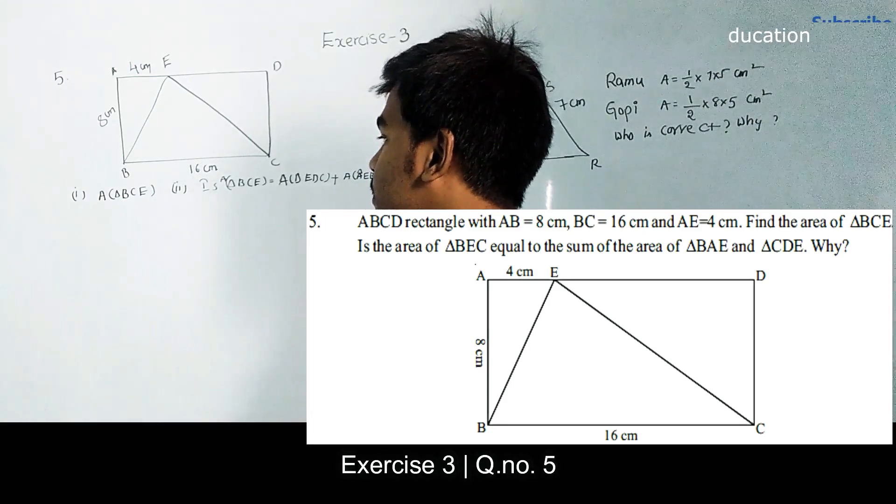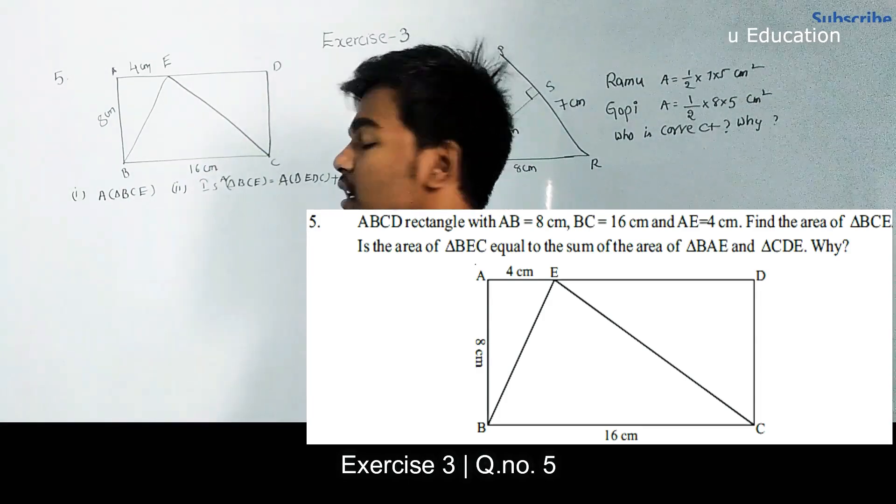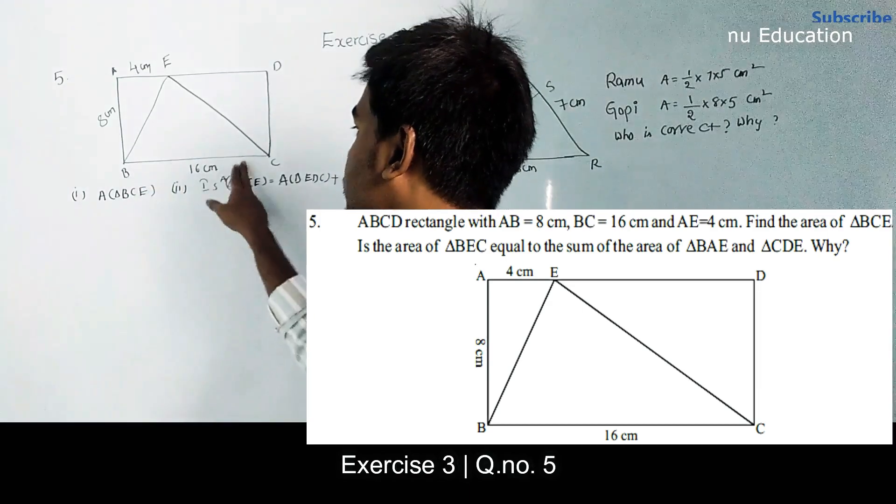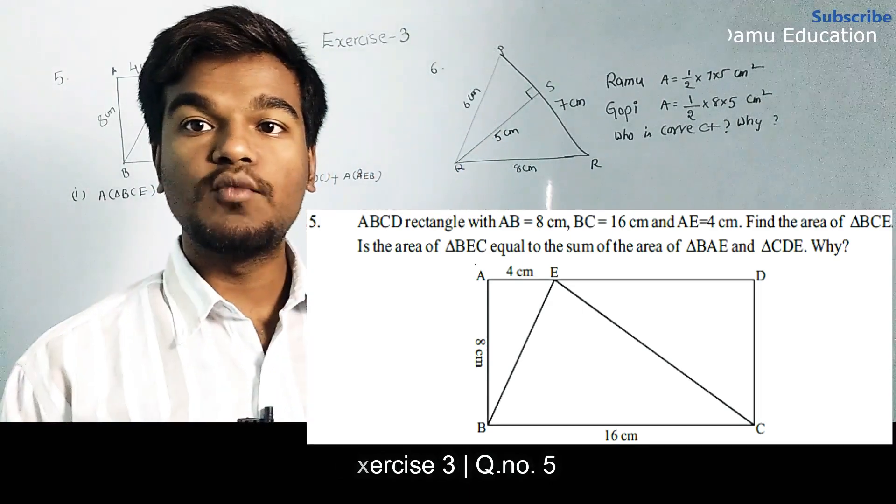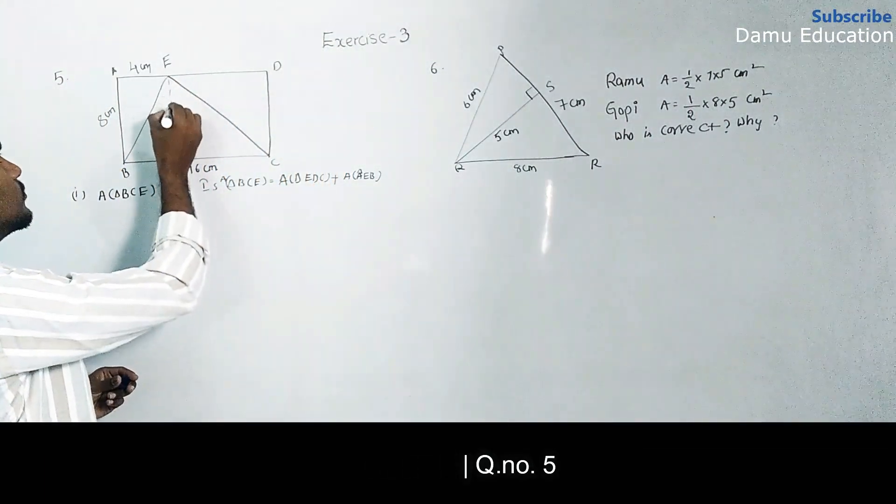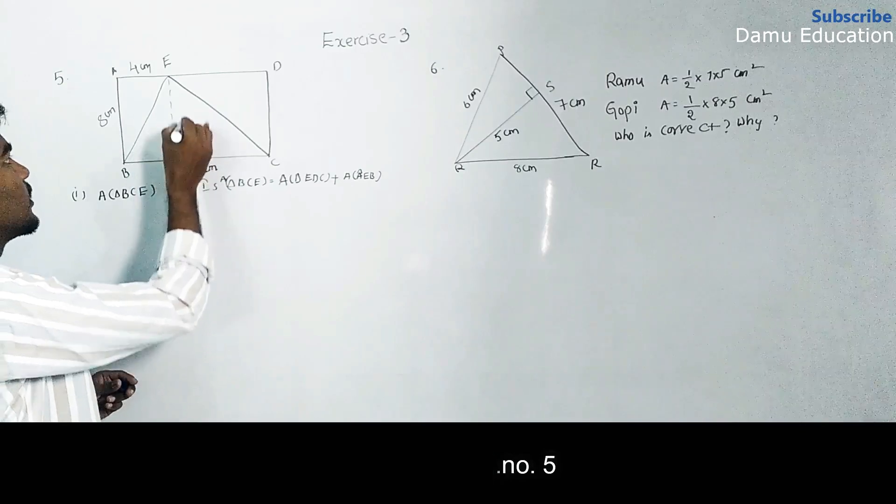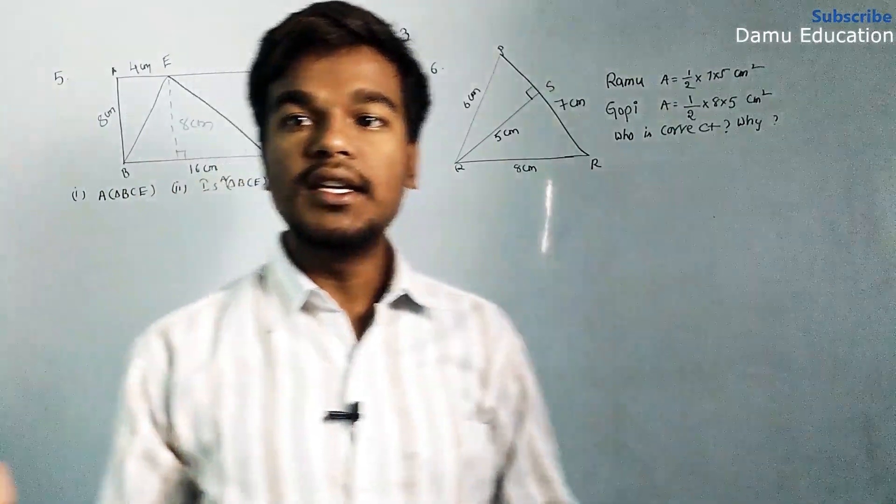What we need to find is the area of triangle BCE. Triangle BCE has BC given as 16 cm, and we need to find the height of that triangle. The perpendicular height is 8 cm.